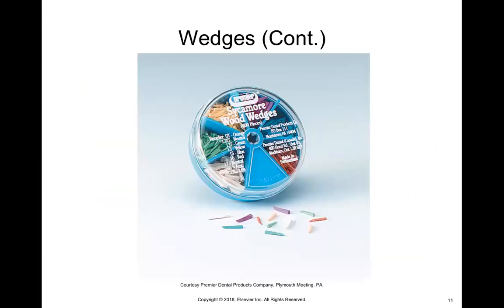Wedges come in different colors that represent different shapes and sizes. Some are thicker and some are thinner because the spaces between teeth vary from person to person. You have to pick the wedge that fits your patient's mouth — you don't want one that's too big and causes displacement or creates a space afterward. Choose one that aligns with the patient's general spacing.